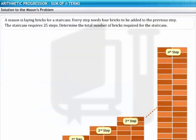Remember the Mason's problem? Using the formula for the sum of N terms, you can now determine the number of bricks to be ordered for the staircase. You can see that the number of bricks in the staircase forms an AP. According to the given data, the first step will have 4 bricks. Therefore, the first term A equals 4.